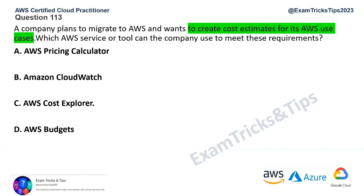With that in mind, Option A, AWS Pricing Calculator, is the correct service for estimating cost. You can choose your services and it will tell you what it would cost to move to AWS — monthly, annual basis, and so on.